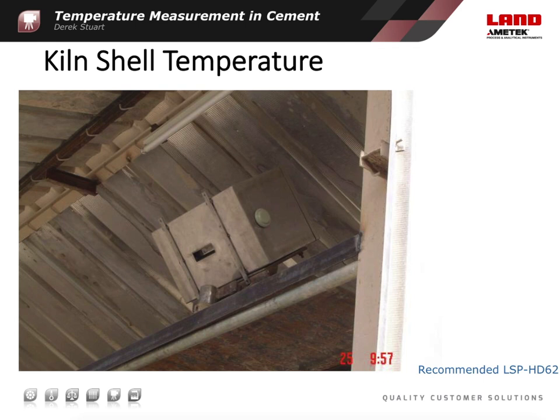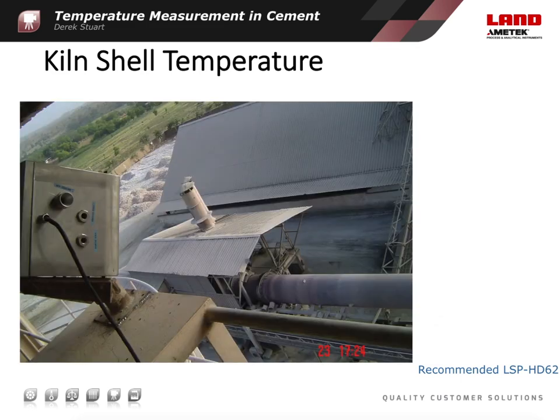A line scanner is a robust and compact solution for temperature measurement. Different mountings are available depending on the details of the installation. This image shows an Ametek Land LSP HD mounted in a rugged protective enclosure with a narrow view port. The Ametek Land LSP HD has a scan angle of 80 degrees, so a single scanner head needs to be set back around 45 metres or 145 feet to measure the length of a 70 metre long kiln. That setback can be halved if two scanners are used.